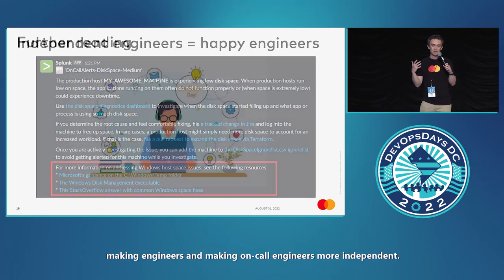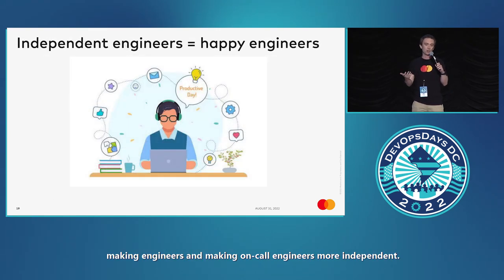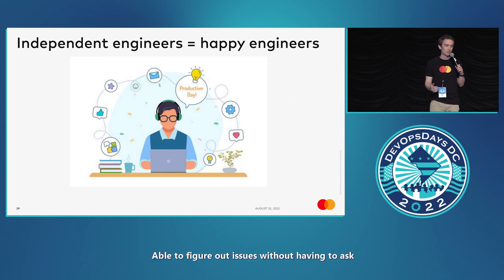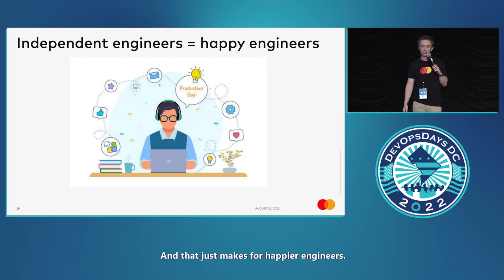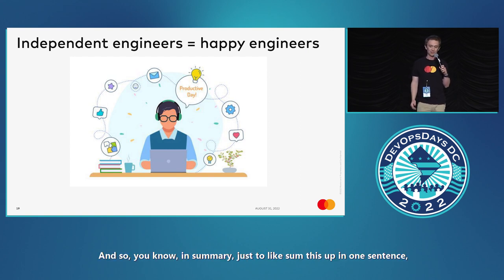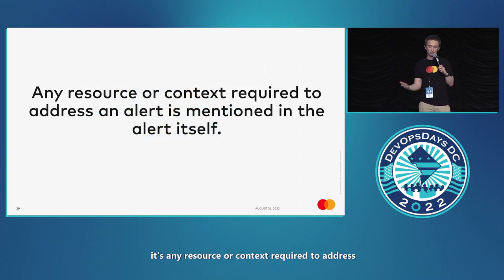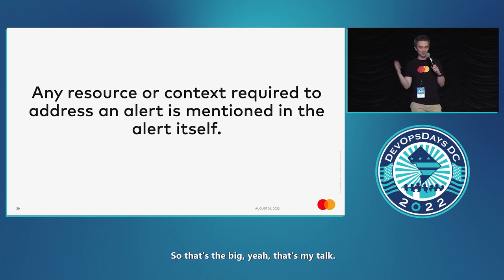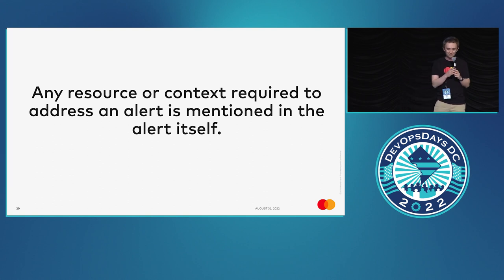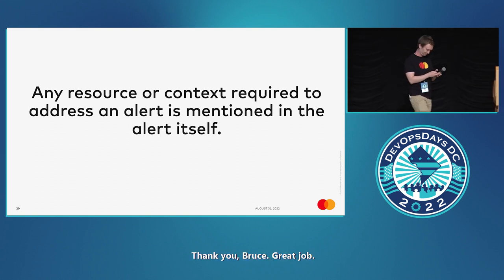Ultimately, this all comes down to making on-call engineers more independent — able to figure out issues without asking for help and able to be as responsive as possible, which makes for happier engineers. To sum it up in one sentence: any resource or context required to address an alert is mentioned directly in the alert itself. That's my talk — thank you.